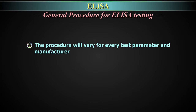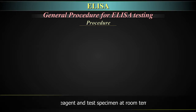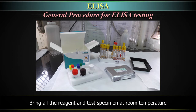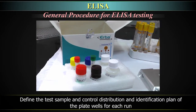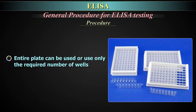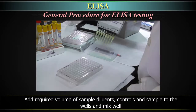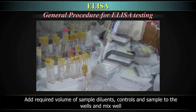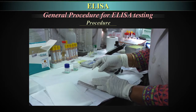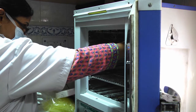The procedure will vary for every test parameter and manufacturer. The procedure to be followed should be based on the manufacturer's instructions and should be validated before being put in use for patient samples. The general procedure includes the following steps: bring all reagents and test specimens to room temperature; define the test sample and control distribution and identification plan of the plate wells for each run. The entire plate can be used, or only the required number of wells. Balanced unused wells can be wrapped and stored. Add required volume of sample diluents, controls and sample to the wells and mix well.